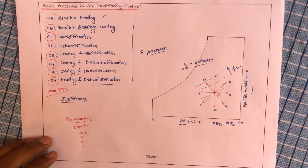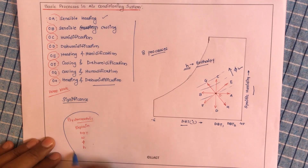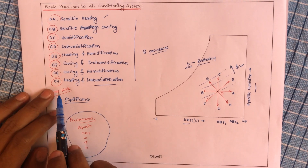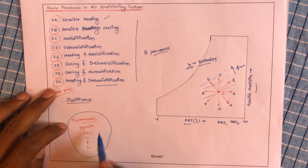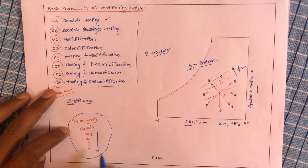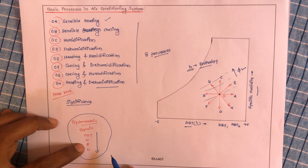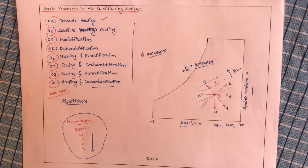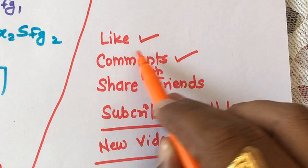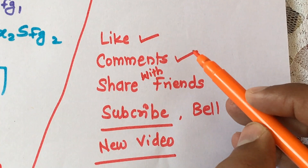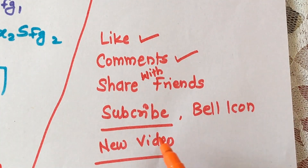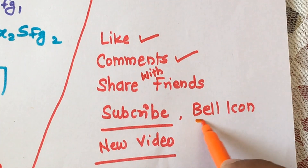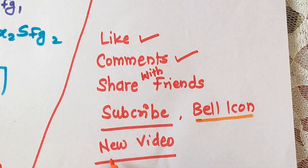I hope you have understood cooling with humidification. Please complete the homework: plot the psychrometric chart for heating and dehumidification and describe what happens to dry bulb temperature, omega, relative humidity, and enthalpy. Thank you — if you enjoyed the lecture, please like the video, share your thoughts in the comments, share it with friends, and subscribe to the channel and press the bell icon so you never miss a notification about new videos.